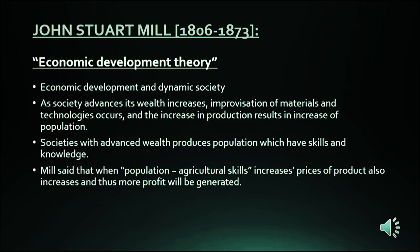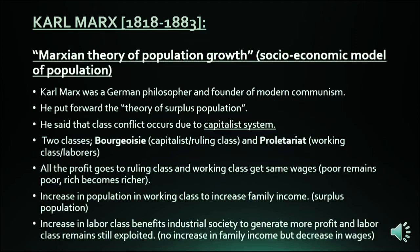That means the population's agricultural skills will increase. When population and agricultural skills increase, productivity and profit will increase. However, Mill was concerned that the working class would increase their population without improving their living standards or family income. He was an active supporter of birth control to curb population growth.